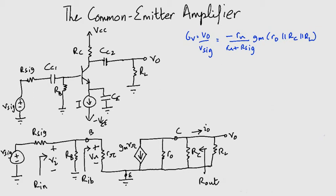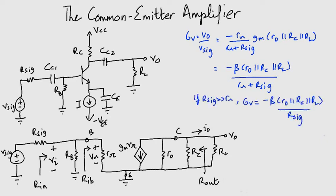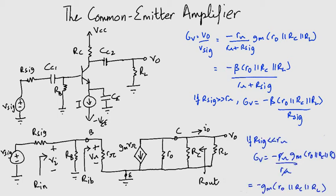Now notice that multiplying GM with RPI gives us beta. However, if we have RB greater than RPI, the overall gain will be highly dependent on beta. This is highly undesirable since beta varies considerably between units of the same transistor type. However, if we select RB to be much smaller than RPI, we find that the overall voltage gain has become independent of beta. It is also now almost equal to the amplifier voltage gain.